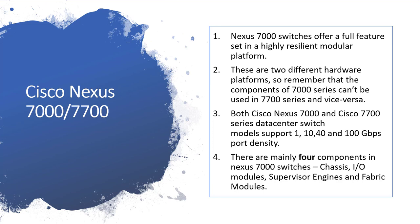An important point: the line cards or modules designed for the 7000 cannot be used on the 7700, and vice versa, because Cisco has specifically created line cards and fabric modules for the 7700. These cannot be interchanged. So remember — the components of the 7000 series cannot be used in the 7700 and vice versa.